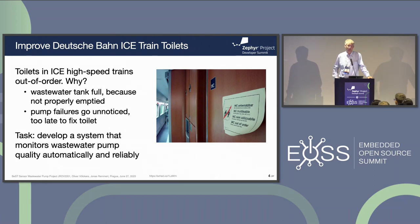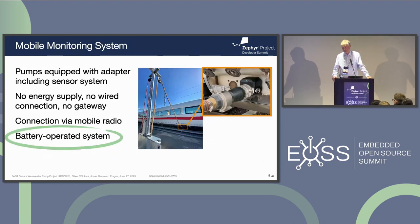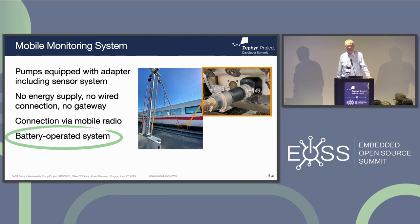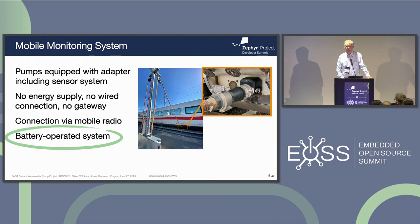It should work fully automatically, and it needs to work reliably because otherwise it doesn't make sense to monitor the quality. On the photo, you can see an ICE train with a magnified part showing a tank with a pipe from the pump. The little black box there is a module that we built from Berliner Sensor Technik, with a green LED indicating that everything is fine — that is our product. The challenge here is that we had no energy supply, no wired connection, no gateway, almost nothing, because it has to work independently for safety reasons. The only connection is via mobile radio and the whole system is battery powered, so everything has to be extremely energy efficient.